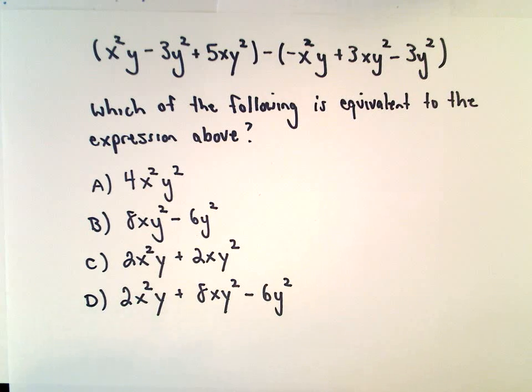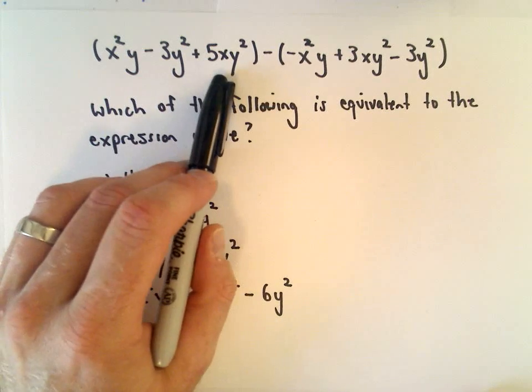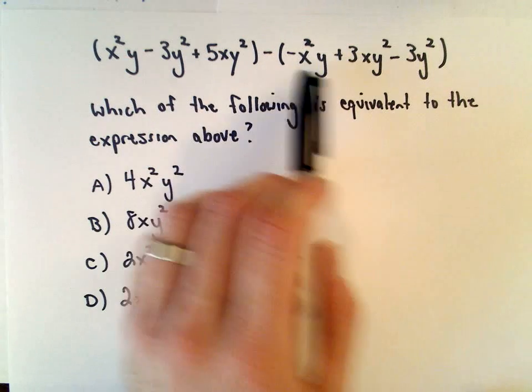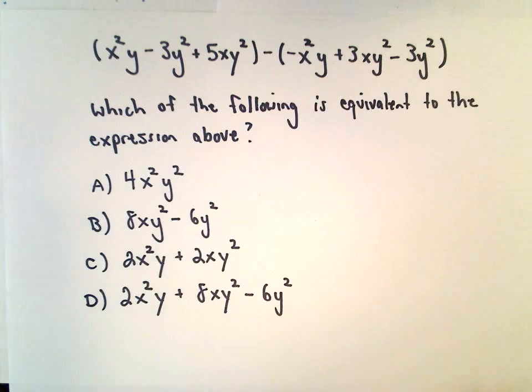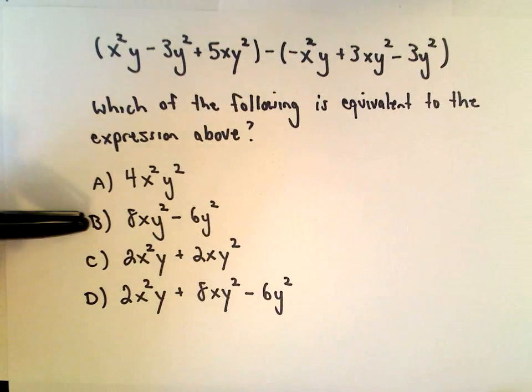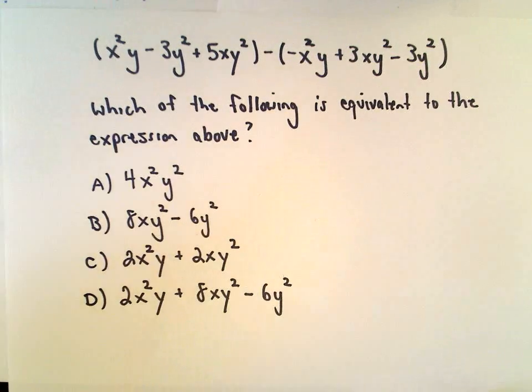Okay, in this example we have to simplify an expression: x squared y minus 3y squared plus 5xy squared, minus the quantity negative x squared y plus 3xy squared minus 3y squared. We have four answer choices here. The basic idea is let's just simplify this and see which one we get.